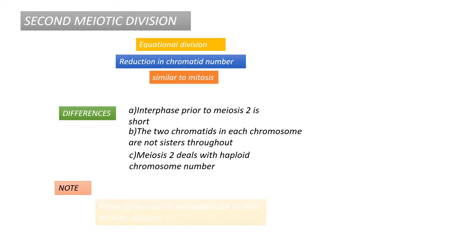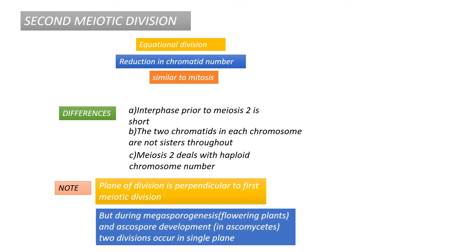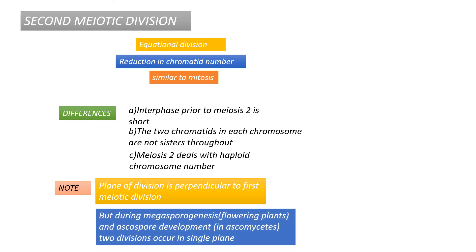Some points to remember: meiosis I and meiosis II occur in different planes, which are perpendicular to each other. There are exceptions — during megasporogenesis in flowering plants and ascospore development in ascomycetes, meiosis I and meiosis II occur in a single plane.